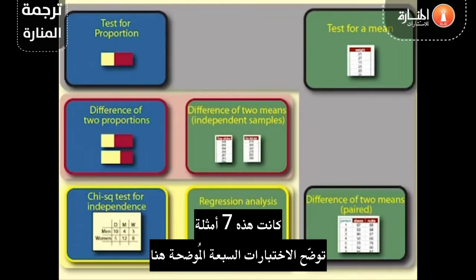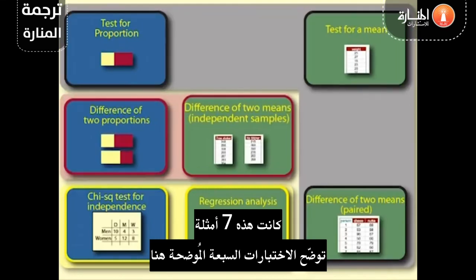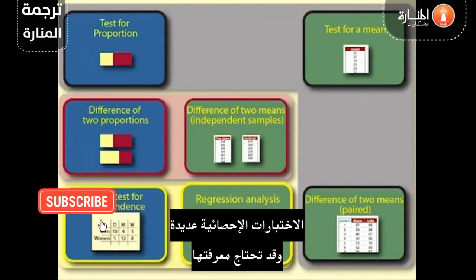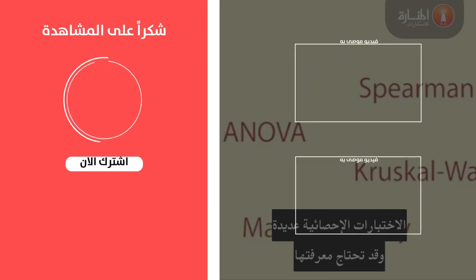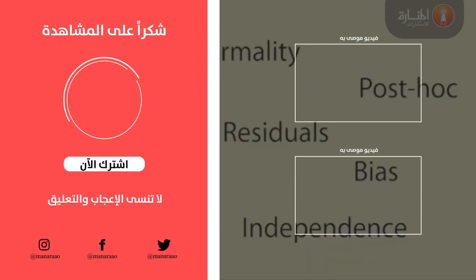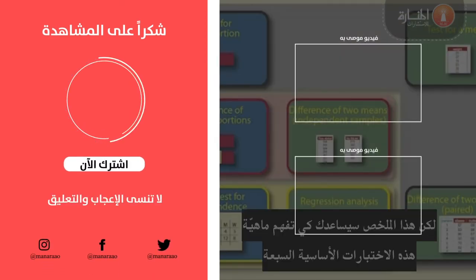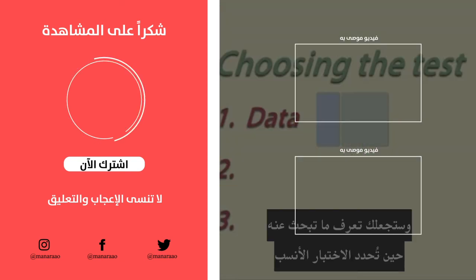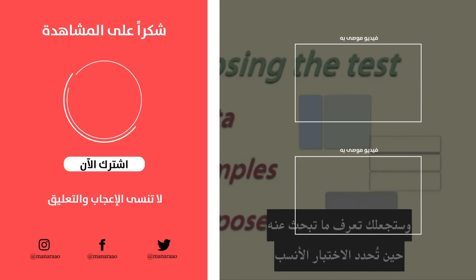Those are seven examples of the seven tests outlined here. There are numerous other statistical tests and other things may need to be considered, but this summary will help you to understand what these seven basic tests do and what to look for when deciding on which test to choose.